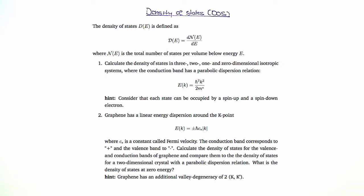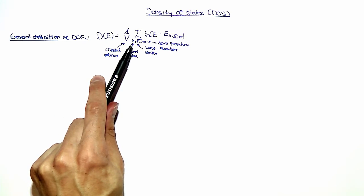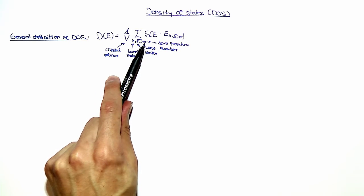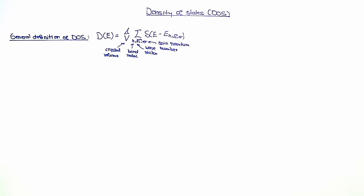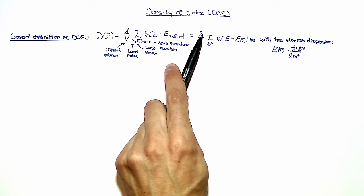Let's start by writing down a general definition of the density of states. A general definition looks like this, where V is the crystal volume, n the band index, k the wave vector, and sigma the spin quantum number. In the problem set, this equation is simplified because we calculate the density of states for the conduction band with spin degeneracy of two. There is now only a summation over k and this two stems from the spin degeneracy.